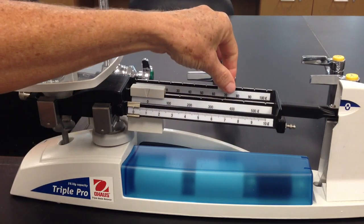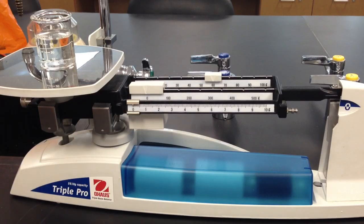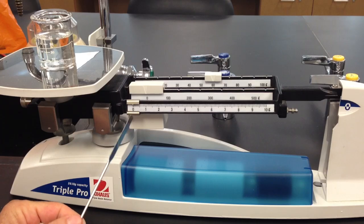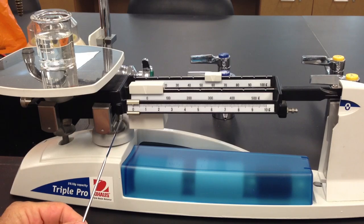So we know that the mass of the beaker with the liquid is 60 something grams. Now we go to our ones beam and use something with a tip other than your finger, otherwise it will make the beam oscillate too much.